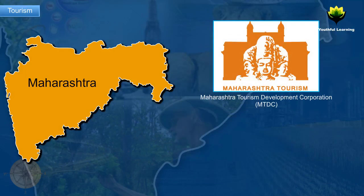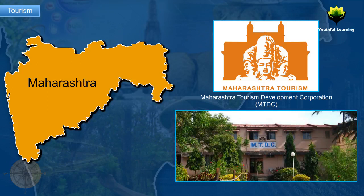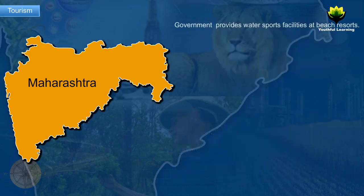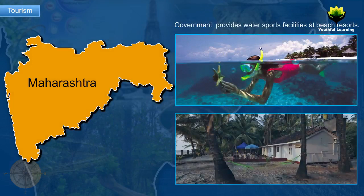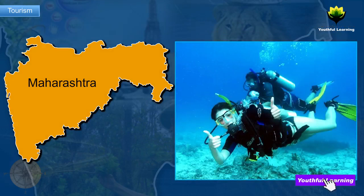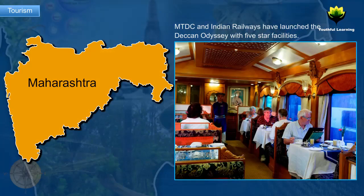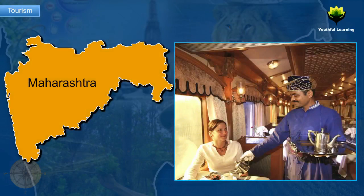The Maharashtra Tourism Development Corporation (MTDC) has built guest houses in most of the tourist locations in the state. The government is also providing water sports facilities at beach resorts and many more such facilities to attract more tourists. The MTDC in alliance with Indian Railways has launched the Deccan Odyssey, which is a moving palace on wheels with various five-star facilities. Foreigners enjoy their journey to many places of Maharashtra by this train.